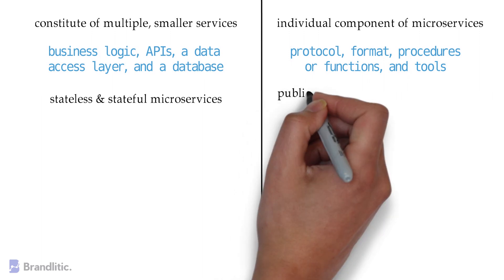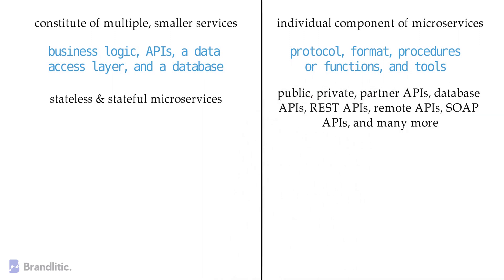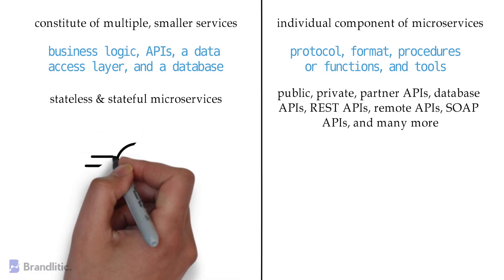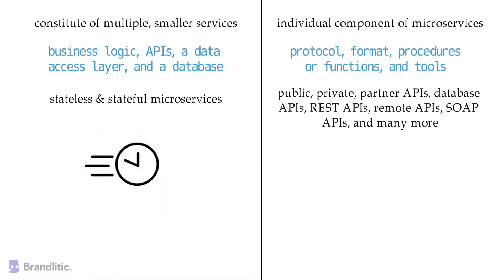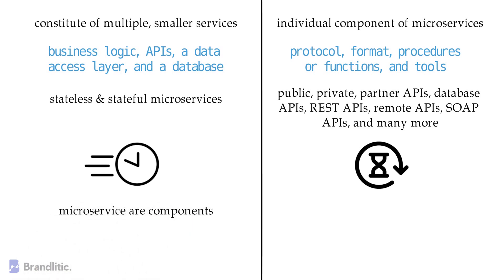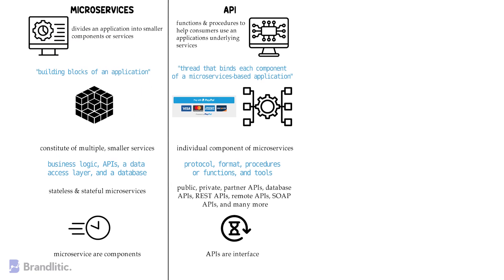Number seven: microservices are quicker to build, whereas APIs take longer time to build than microservices. And lastly, we should never forget that microservices are components whereas APIs are interfaces. Now that we understand the differences between the two, let's look into the similarities between API and microservices.